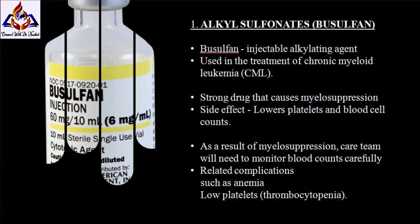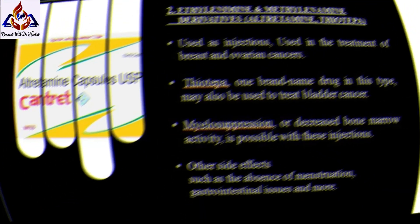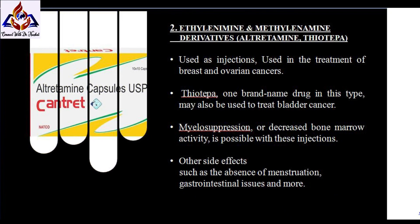The first class, alkyl sulfonates: busulfan is an injectable alkylating agent mainly used in the treatment of chronic myeloid leukemia (CML). This is a strong drug that causes myelosuppression, a side effect that lowers platelets and blood cell counts. As a result, the care team will need to monitor blood counts carefully for related complications such as anemia and low platelets, which is thrombocytopenia.